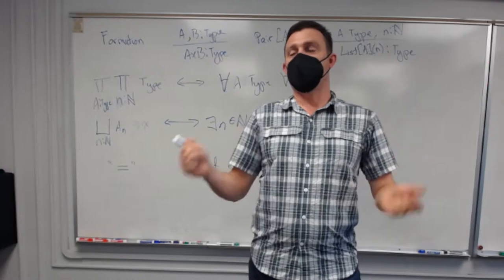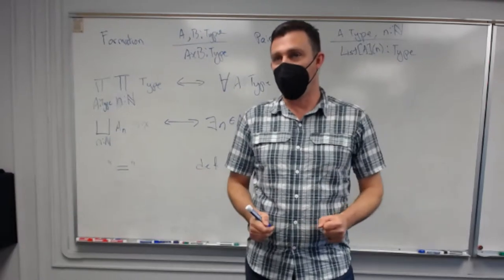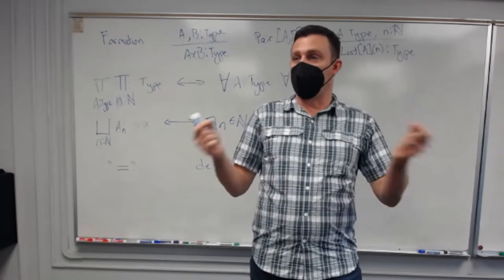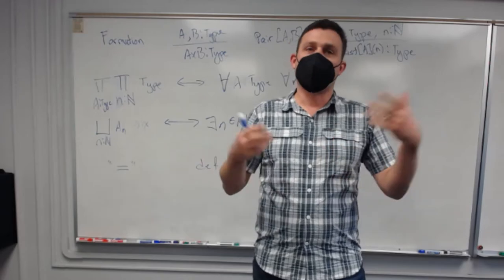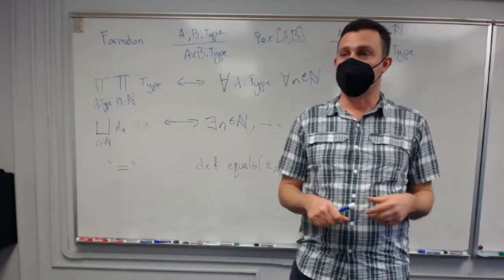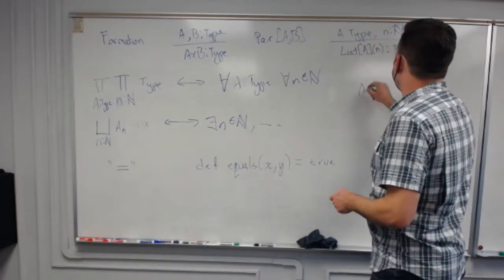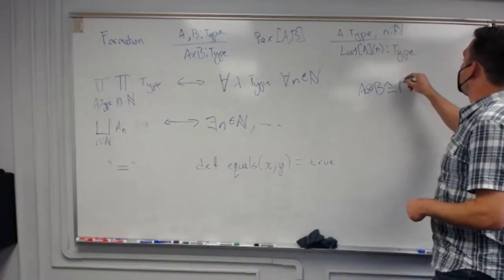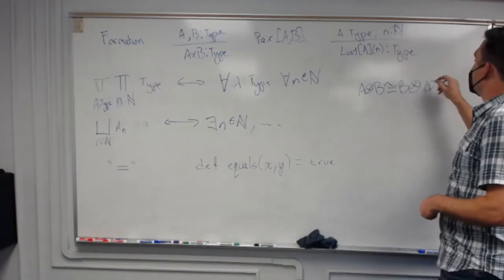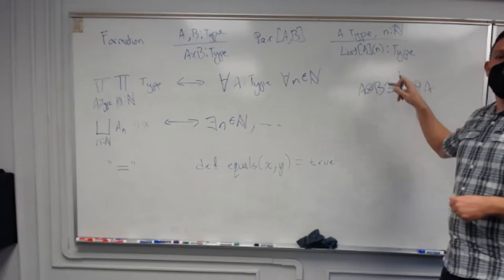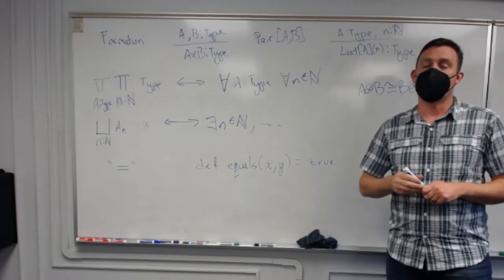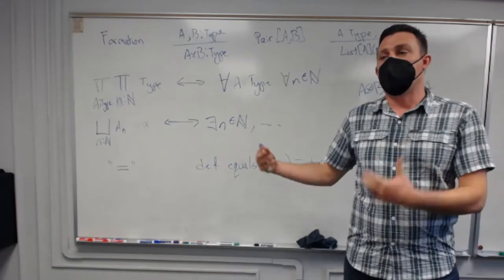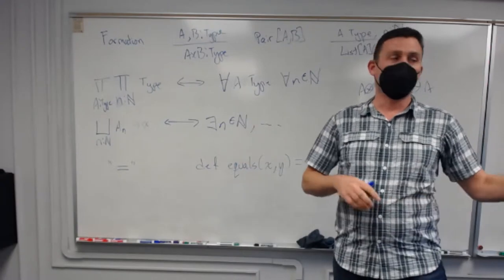For example, when I say all vector spaces of dimension two are the same, they're not really the same - there's a path between one and the other that's interchangeable and they don't care about the differences. Or A tensor B is the same as B tensor A: there's some kind of natural isomorphism. When you try to write those things down and get them right, you end up needing something sophisticated.